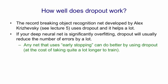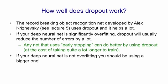I think any net that requires early stopping in order to prevent it overfitting would do better by using dropout. It would, of course, take longer to train, and it might need more hidden units. If you've got a deep neural net and it's not overfitting, you should probably be using a bigger one and using dropout, and that's assuming you have enough computational power.